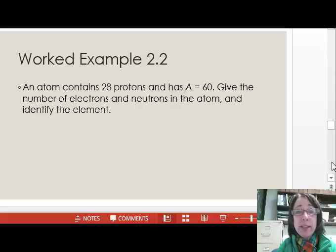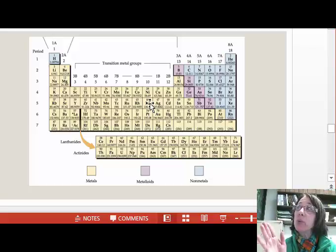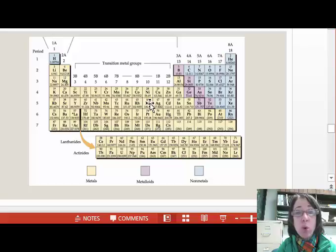We are given that the atom has 28 protons. Since this is equal to the atomic number, we can look at the periodic table to determine that the element is nickel or capital N lowercase i.